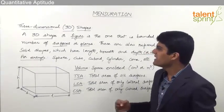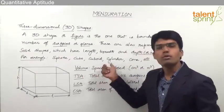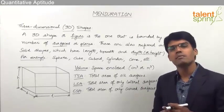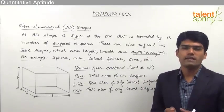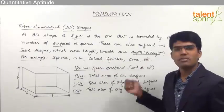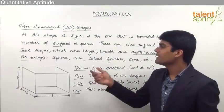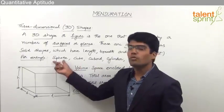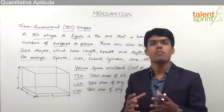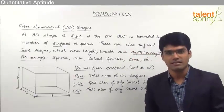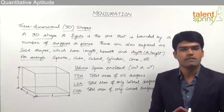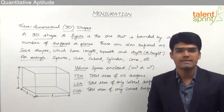Some examples of 3D shapes are sphere, cube, cuboid, cylinder, cone, etc. When it comes to bank exams, they generally concentrate on these types of 3D shapes. A sphere is nothing but a perfectly rounded object — like a ball-like structure. So anything which appears like a perfectly rounded object or like a ball can be considered as a sphere.